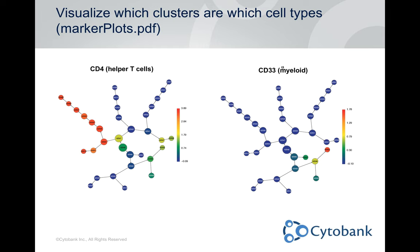The results of Citrus are presented as a file to download containing several PDFs and a couple of CSV spreadsheet files. Regardless of what kind of Citrus you're running, you'll get marker plots that show the expression level of all the channels you used to create the tree, layered on top of the tree in a heat map-like fashion. You can see where each population of interest exists — for example, this branch is the CD4 branch and this node is the CD33-positive node. Unlike SPADE, the Citrus tree is hierarchical, similar to traditional gating, wherein all events in a child node are also in its parent node, all the way back up to the original. Each end node on a branch is the most phenotypically pure population.